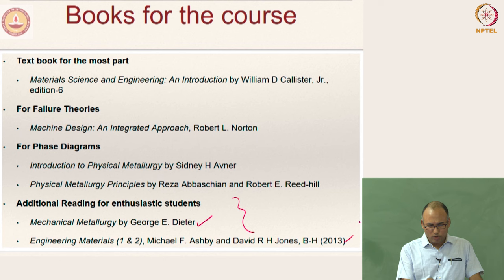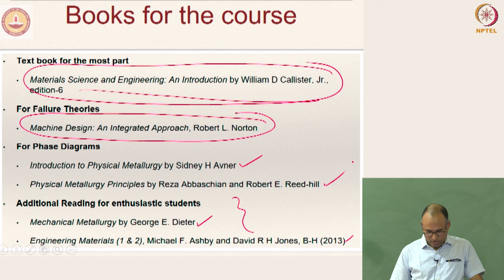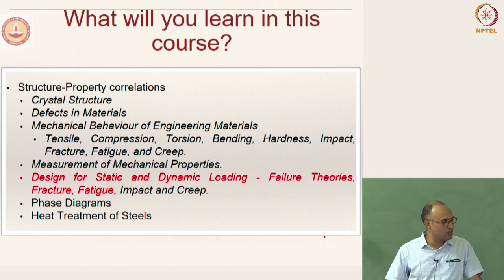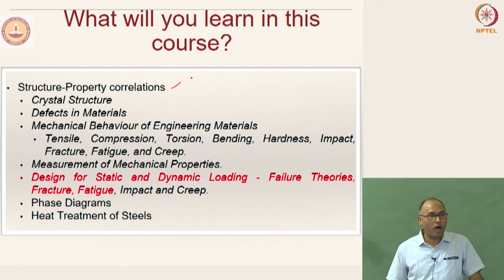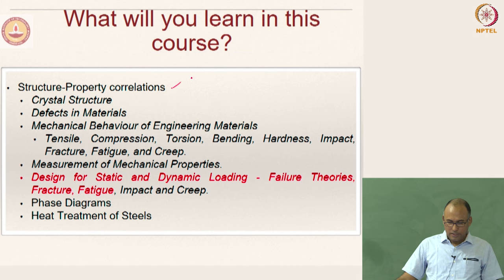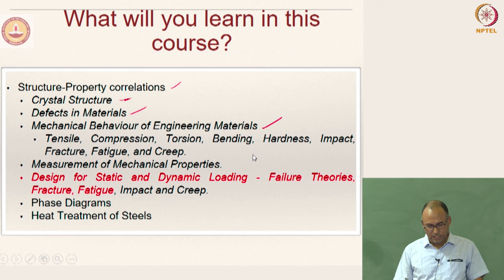Several copies of these books are available in the library, with a few copies of the last textbook. The course portfolio details are given for each chapter and section. We start with structure-property correlations, studying how the structure of the material leads to different kinds of properties needed for designing components as a mechanical engineer. We will study crystal structure, defects in materials, and how crystal structure and defects lead to different kinds of mechanical behavior.